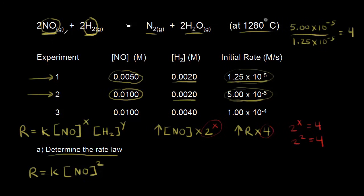Next, let's figure out the order with respect to hydrogen. This time we want two experiments where the concentration of nitric oxide is constant — that would be experiments two and three, where the concentration of nitric oxide is 0.01 molar in both.